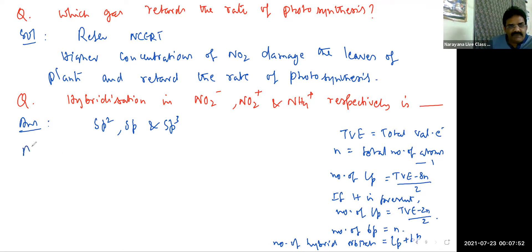For example, NO2 minus. In NO2 minus, the number of lone pairs, total valency electrons: nitrogen 5, each oxygen 6, so 12 plus 5, 17, and one negative charge is there, so total valency electrons is 18 minus 8N. 8 into total atoms are 3, so 3 minus 1 equals N, that is 2, divided by 2.